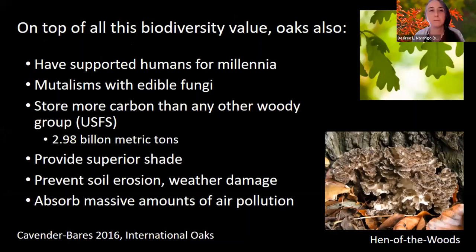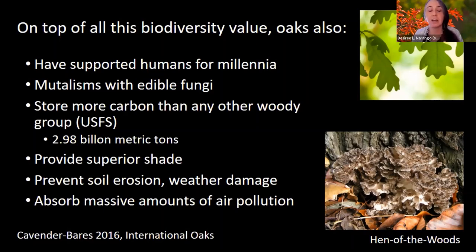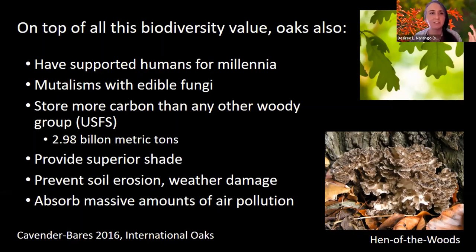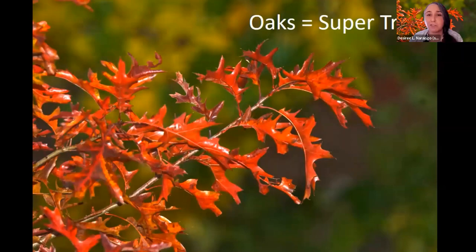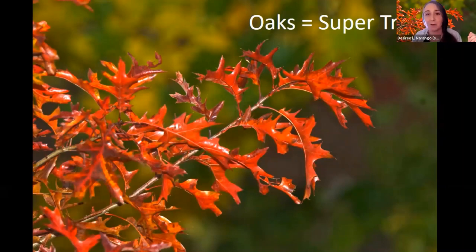So oak trees are supporting tremendous moths, butterflies, birds, bees, beetles, and mammals, and so much more. On top of all this biodiversity value, they've also been supporting us for millennia by providing timber and fuel. They have incredible mutualisms with edible fungi like hen of the woods. They store more carbon than any other woody plant group across the world — more than 2.98 billion metric tons of carbon. They provide superior shade for cooling during the hot summer months, prevent soil erosion, and absorb massive amounts of air pollution. I would argue that oaks are really just a super tree.